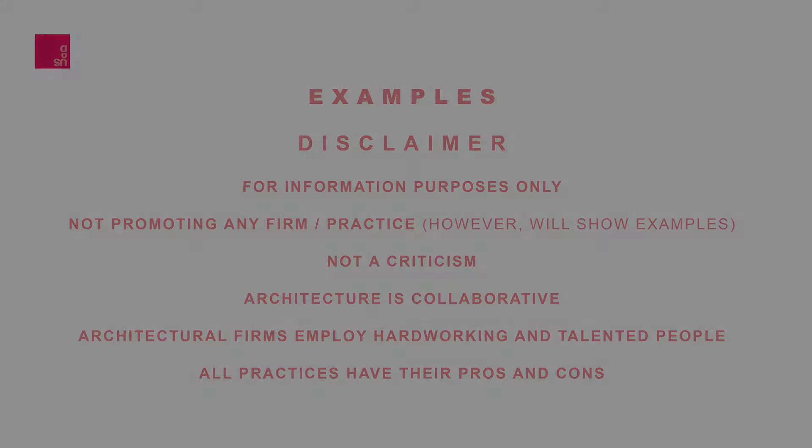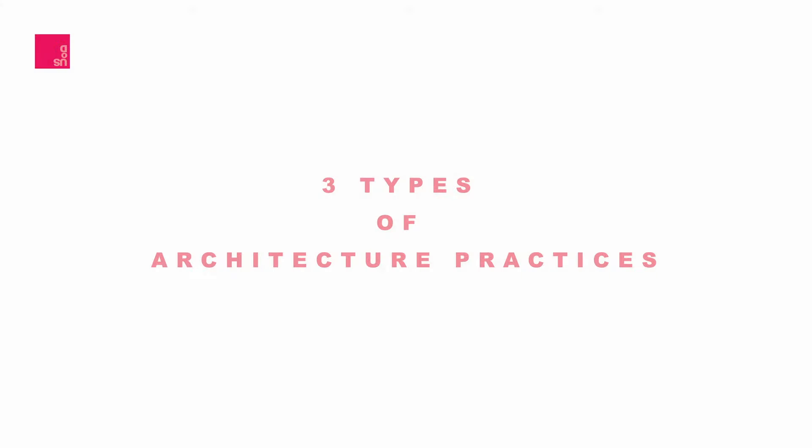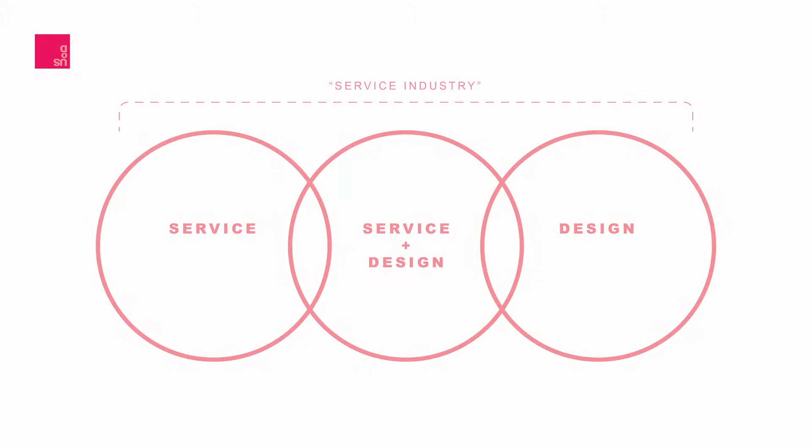In architecture, there are three types of architectural practices, and they have overlaps. As a whole, the architectural practice falls under the umbrella of the service industry. An architect provides services to a client — an individual, a developer, a city, a government, or even a country. Some people might debate that categorization, but currently that's where architecture sits.